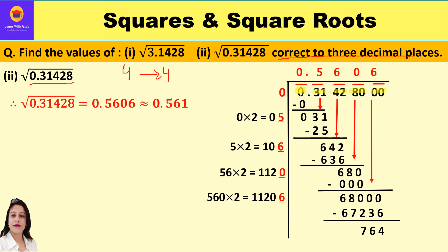Starting long division: first period is 0. The largest number whose square is ≤ 0 is 0, so quotient digit is 0, remainder is 0. Bring down next period 31; dividend is 31. Doubling quotient 0 gives 0; after trials, 5 is suitable: 05×5=25 ≤ 31. So quotient digit is 5, remainder: 31−25=6. Bring down next period 42.